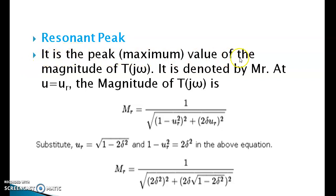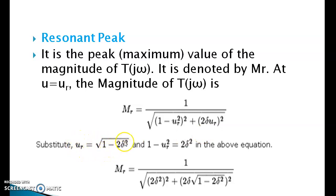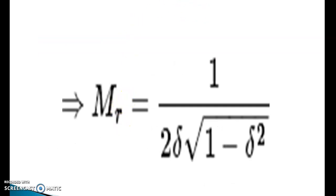Resonant peak: it is the peak value of the magnitude of T(jω), denoted by Mr, evaluated at u = ur. The magnitude Mr = 1 / √((1 - ur²)² + (2ζur)²). Substituting ur = √(1 - 2ζ²) and (1 - ur²) = 2ζ², the resonant peak simplifies to: Mr = 1 / (2ζ√(1 - ζ²)).